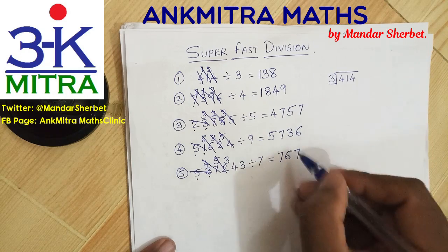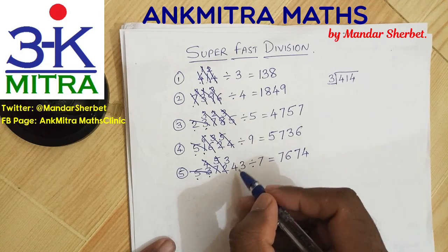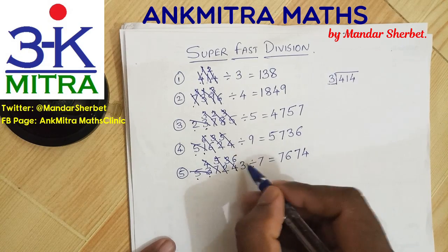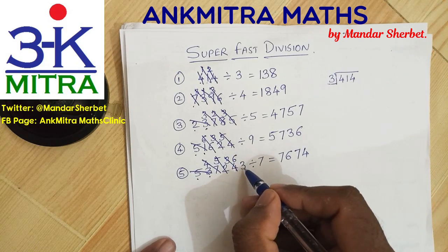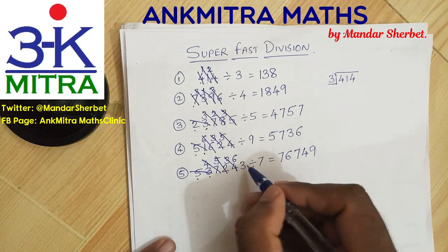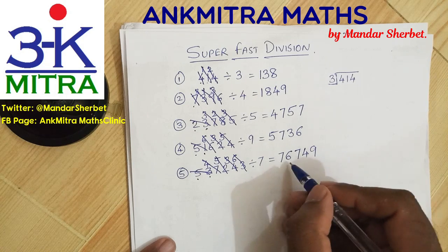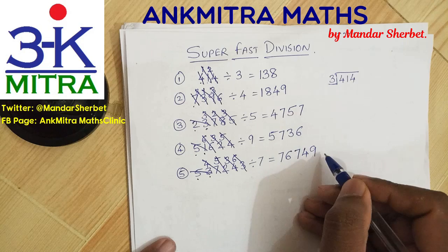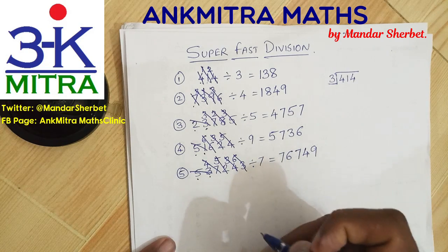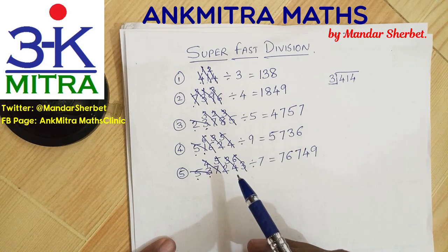The next number is 34. 4 times 7 is 28 — subtracting 28 leaves 6. The final number is 63, which is 9 times 7. The division is now complete and the answer is 76749.